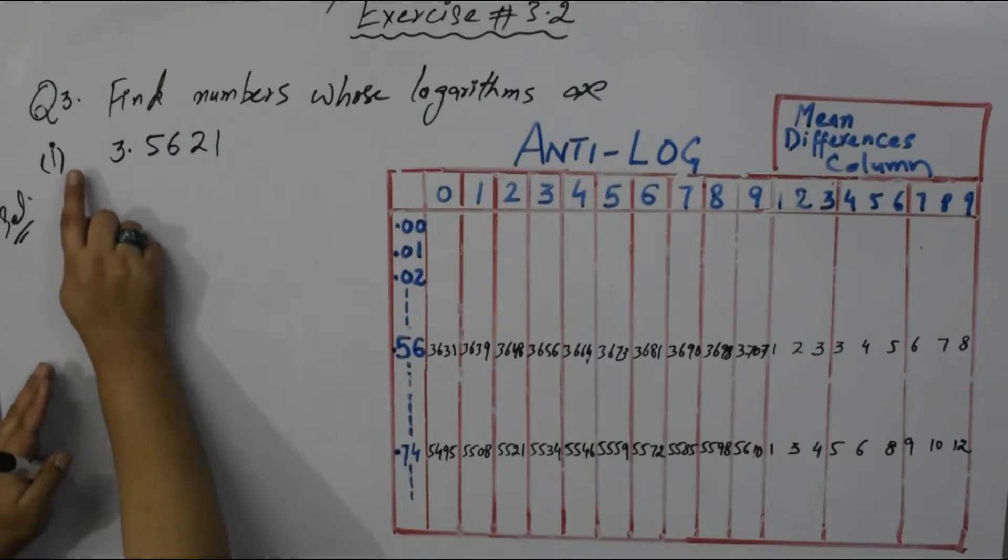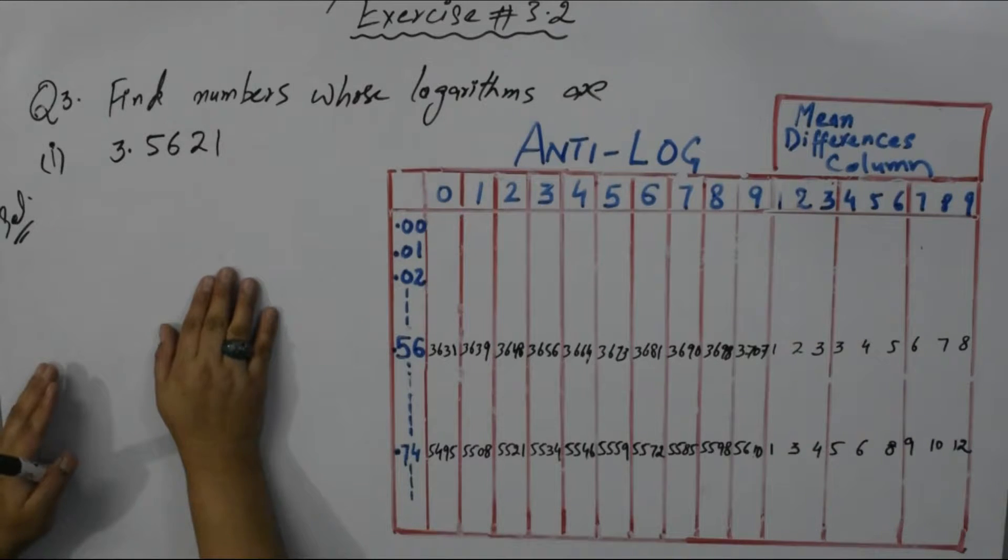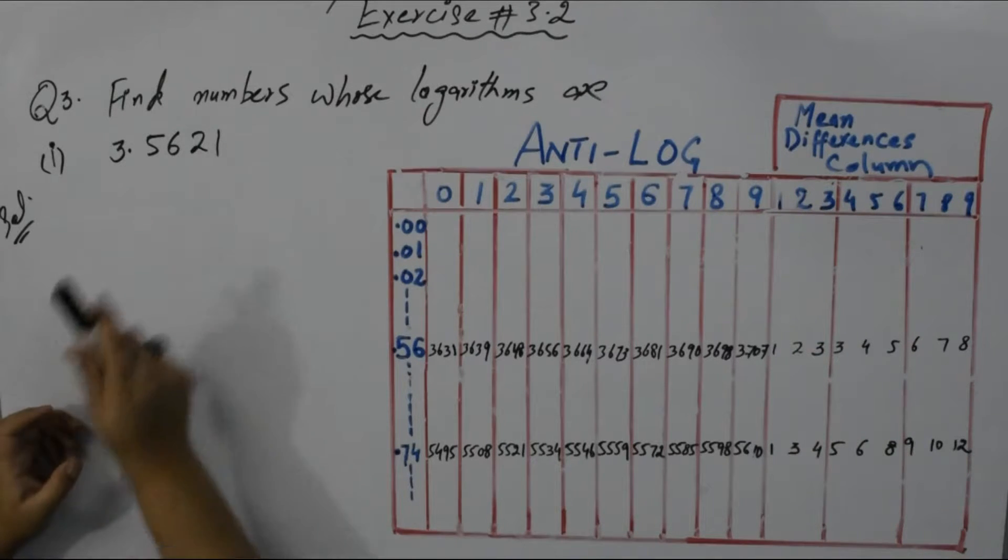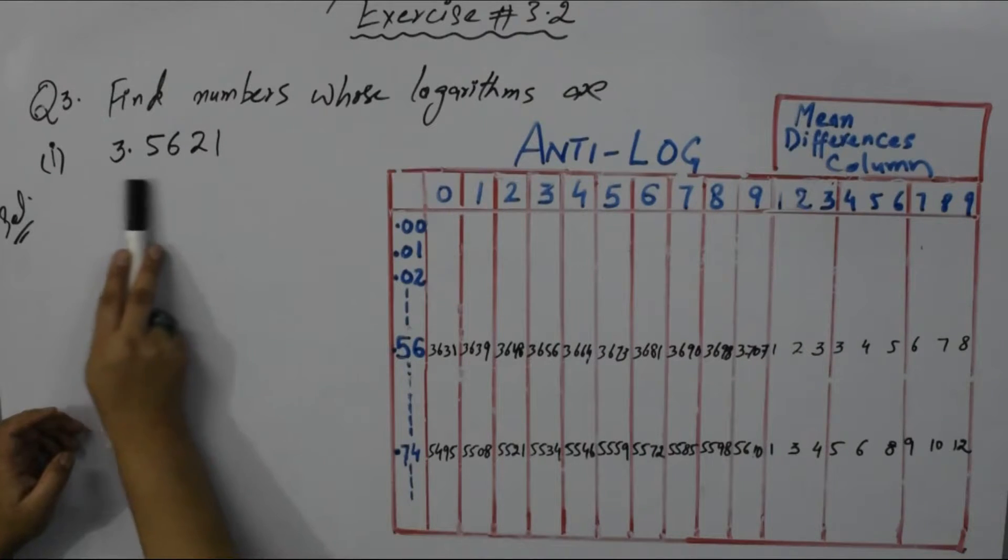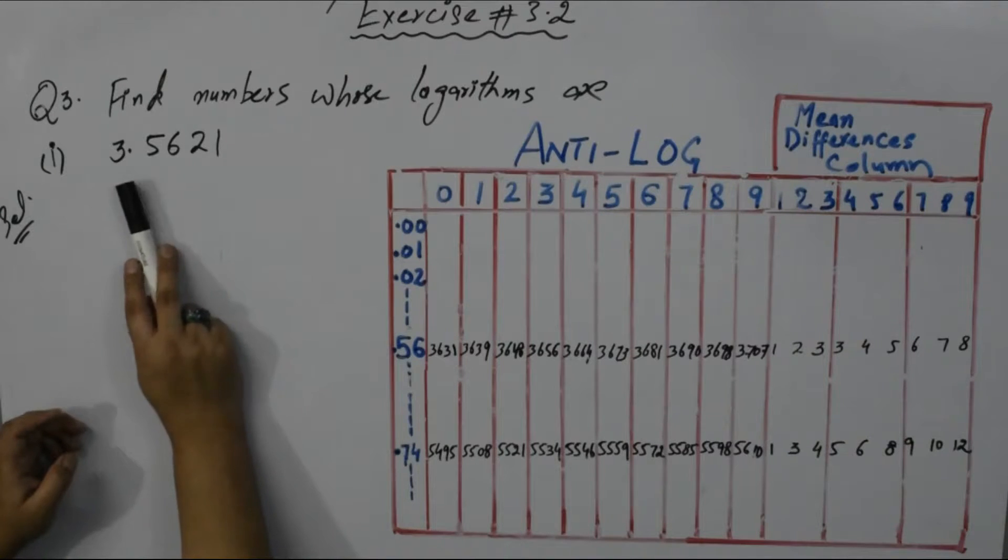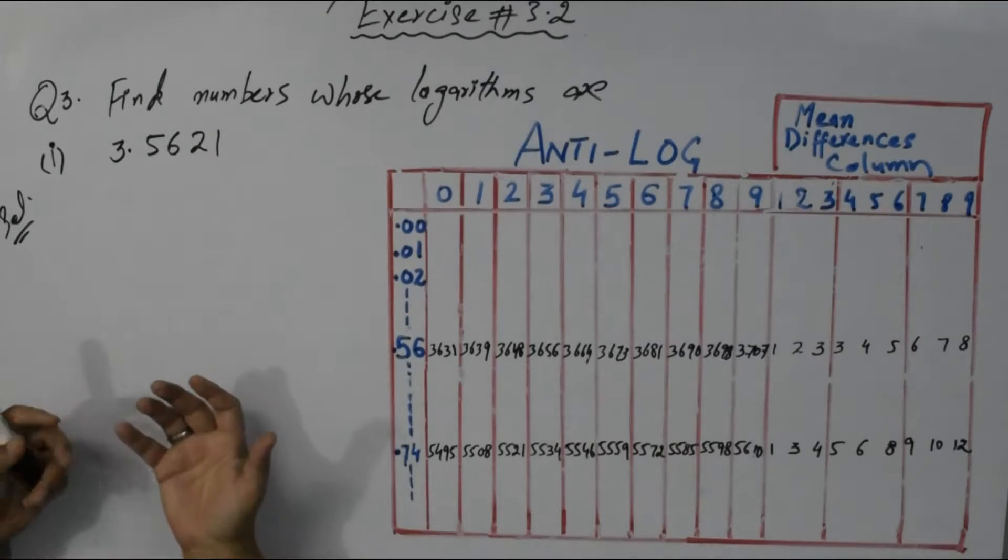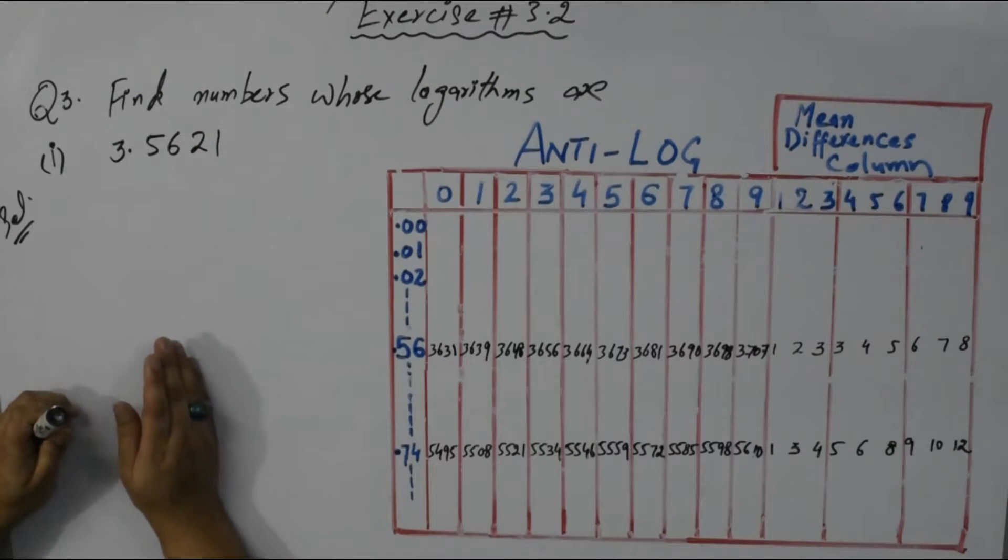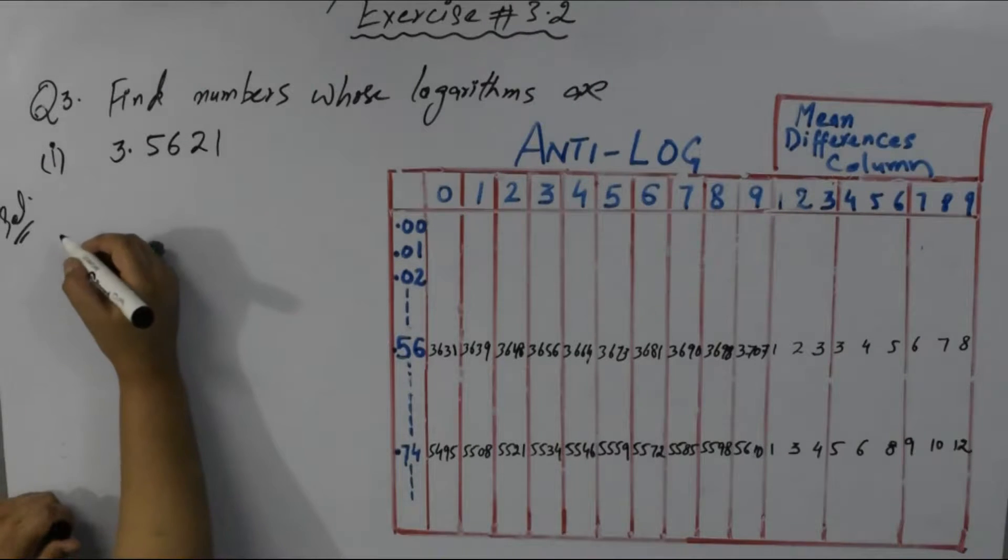I am doing question number third of your exercise 3.2 at page number 65. Find numbers whose logarithms are... they have given us logarithms and we have to find those numbers.